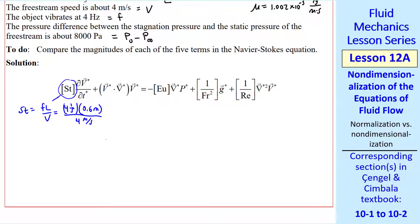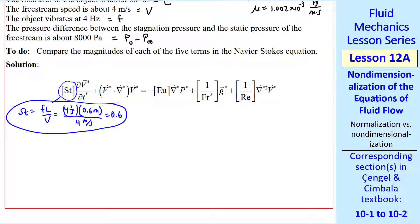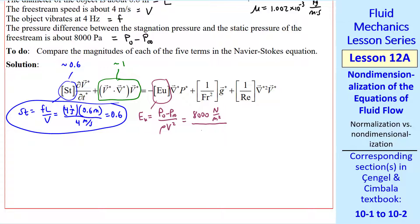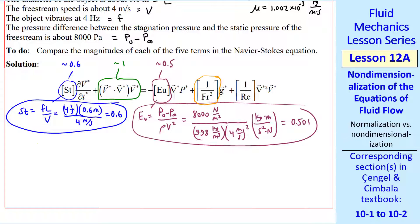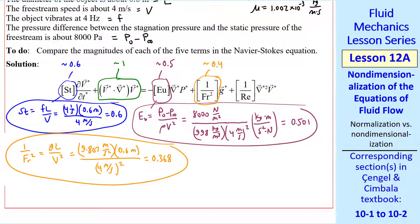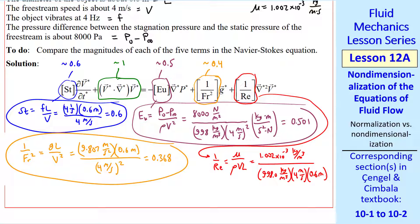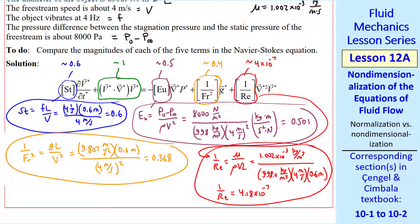Now let's compare the magnitudes of each of the five terms in the Navier-Stokes equation. The Strouhal number is fl/V — plugging in our characteristic scales, we get 0.6, so order of magnitude 0.6. The convective term, if properly normalized, should be order of magnitude 1. The Euler number is (8000 N/m²)/(rho·V²) ≈ 0.501, so order of magnitude 0.5. The inverse Froude number squared is gl/V² ≈ 0.368, so order of magnitude 0.4. Finally, 1/Re = mu/(rho·V·l) ≈ 4.18 × 10⁻⁷, so the viscous term is of order 4 × 10⁻⁷.